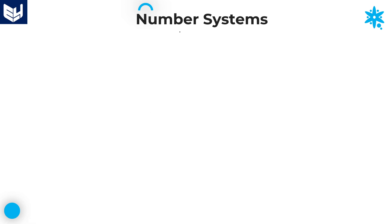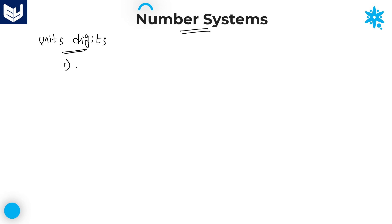Hi everyone, welcome to the session. In this session I am explaining the topic Number Systems, specifically the concept of units place digit — how to calculate the units place digit of any number. In the last sessions I explained the concept using first category digits (0, 1, 5, 6) and second category digits (4 and 9). These two categories are already completed.